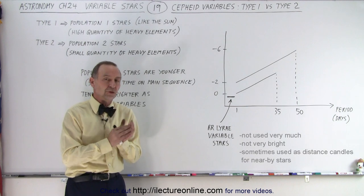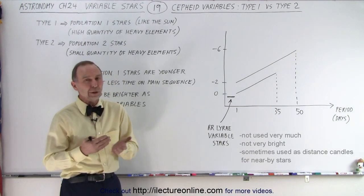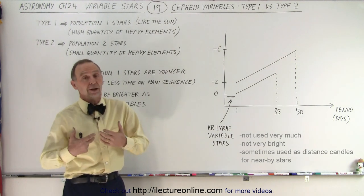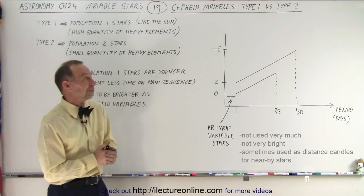The traditional Cepheid variables, which are now known as Type 1, and a new set of variables which were discovered, Type 2. Well, not us - they're called Type 2 Cepheid variables.